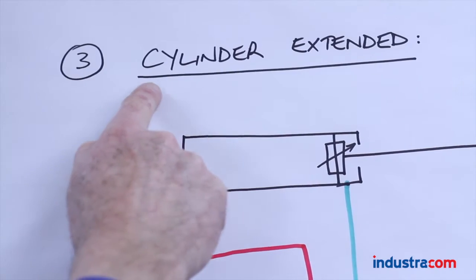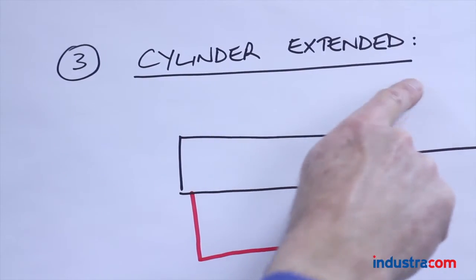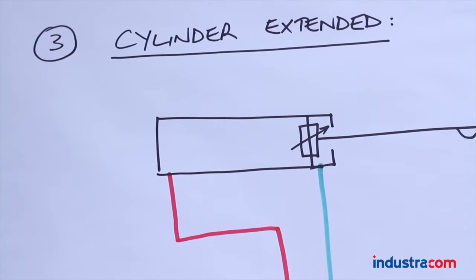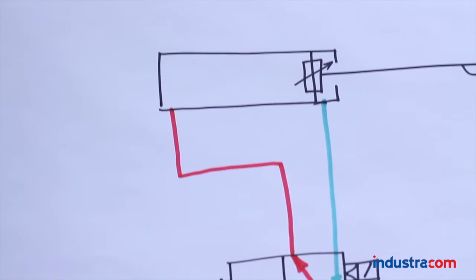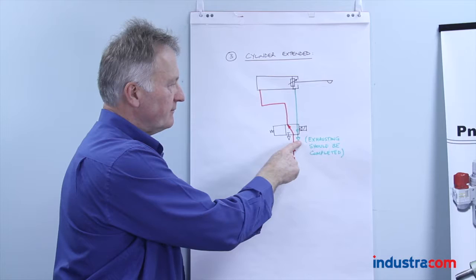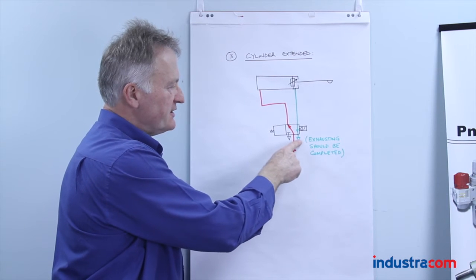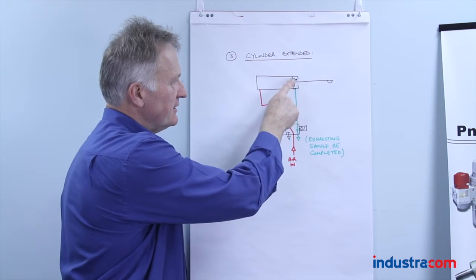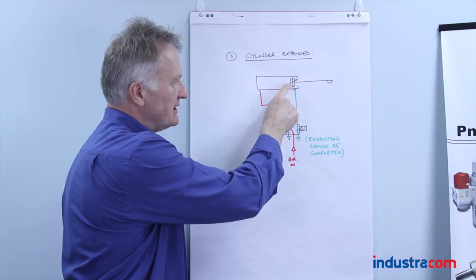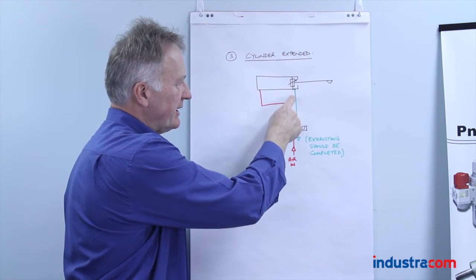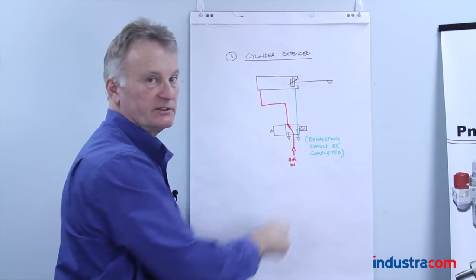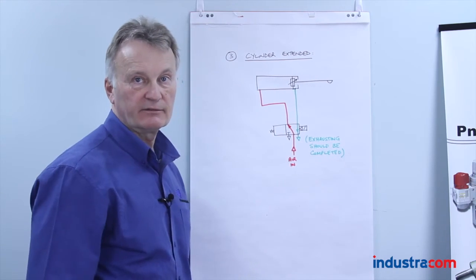Once the cylinder has extended, there should now be no air exhausting out through the exhaust port of the valve. If there is air exhausting out of here, it's because the actuator is leaking — we're getting bypass — and it continues to exhaust out of the valve.